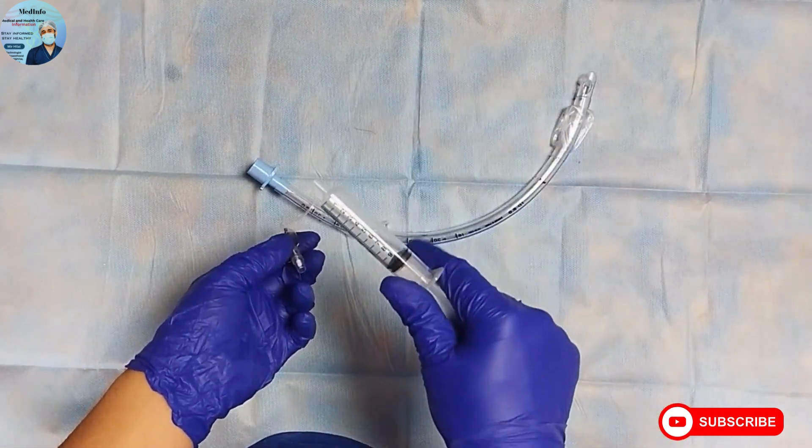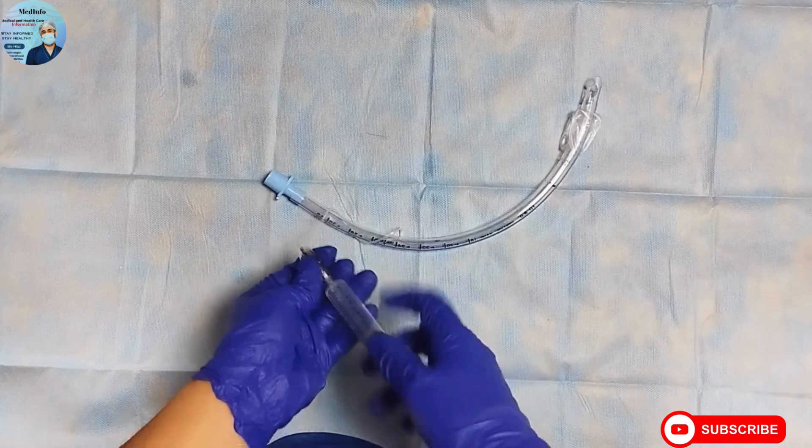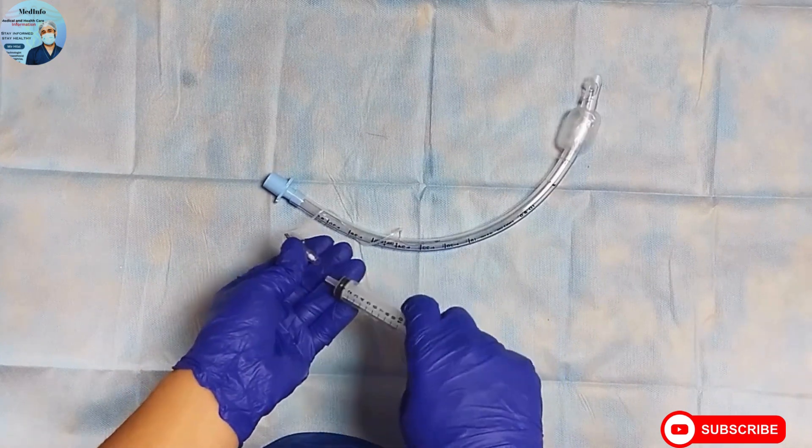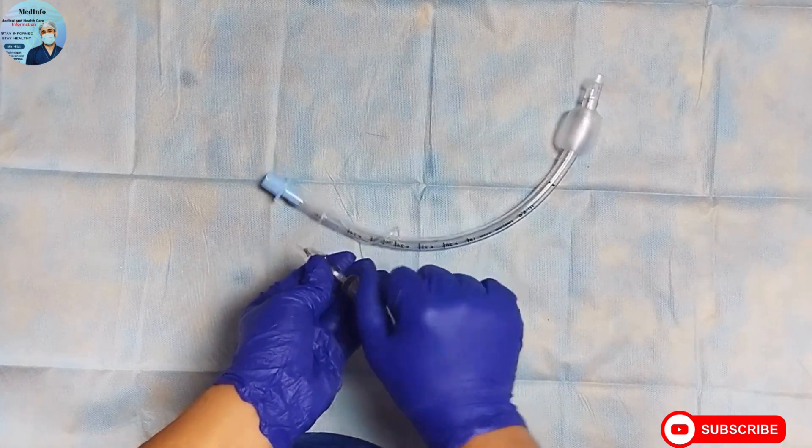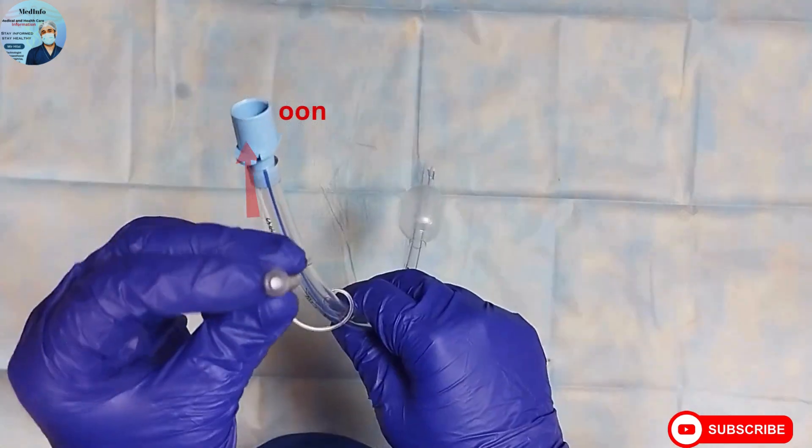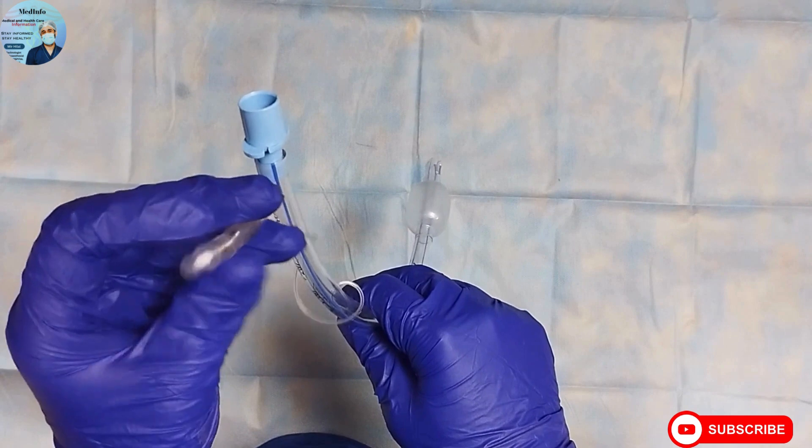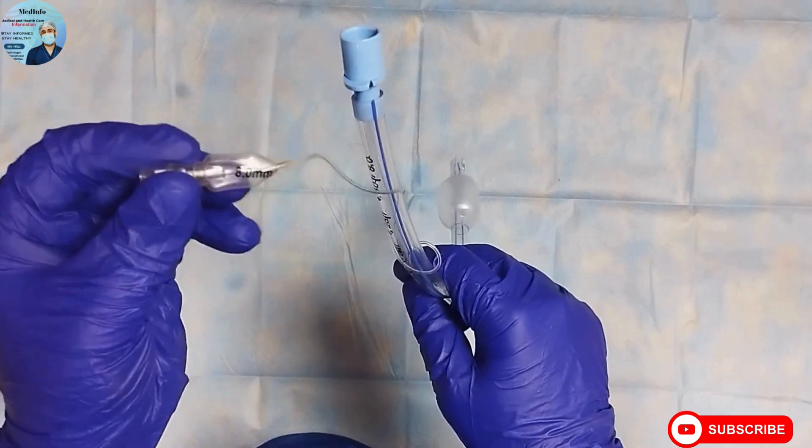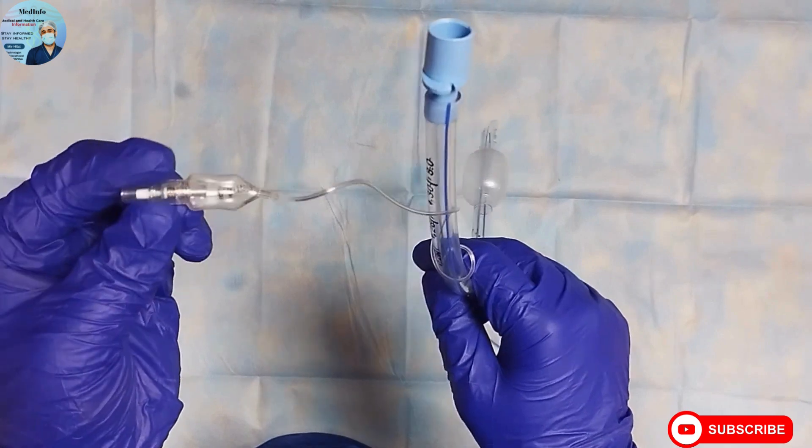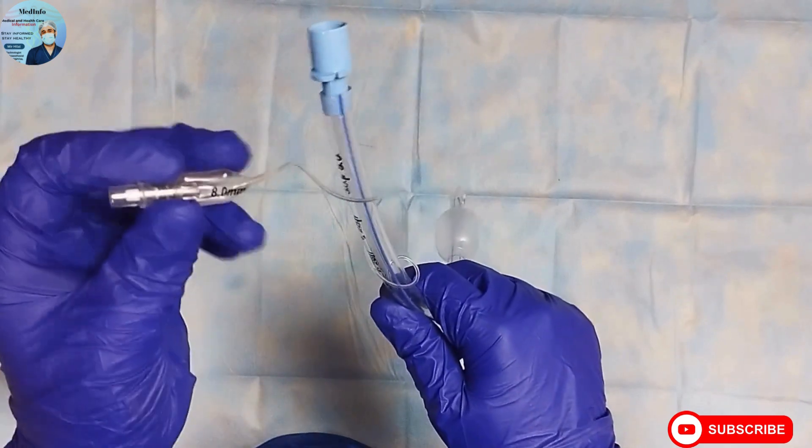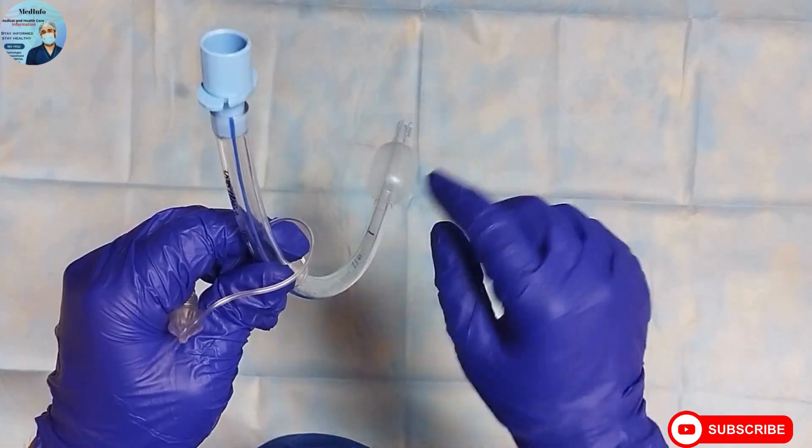This part at the proximal end of the endotracheal tube is called the pilot balloon. It has a one-way valve inside it which opens when you press it with a syringe. This way you can inflate the cuff with the required amount of air. This valve is closed when you release it, so the cuff remains inflated.